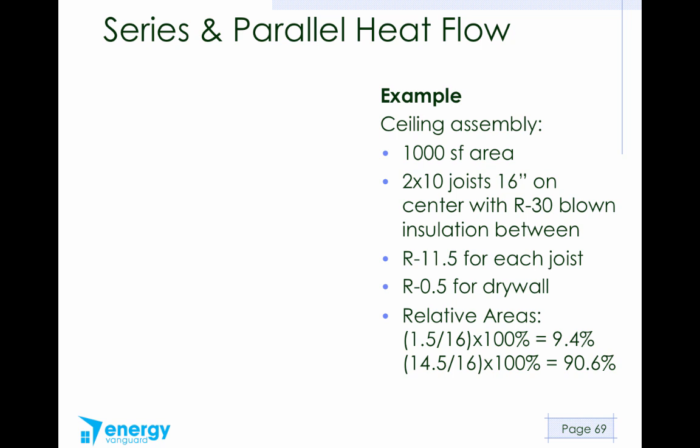The next thing we need to know is the area. So the joists are 1.5 inches wide. A 2 by 10 is 1½ by 9¼. So the width is 1½. We've got 16 inches on center, so the cavity is 14½ inches. And the relative areas then would be 1.5 divided by 16. So out of every 16 inches across, we're going to have 1½ inches of the ceiling joist. If we do that division, multiply by 100%, that's 9.4% of the area will be ceiling joist. And 14½ out of 16 is 90.6% of all the area will be the insulation.